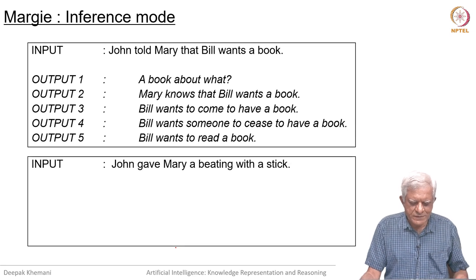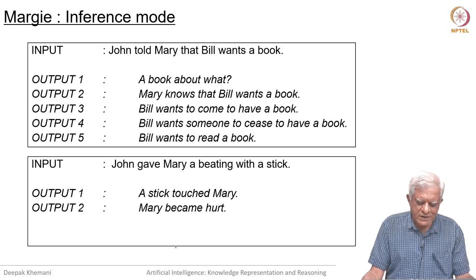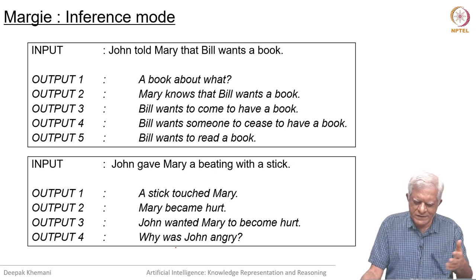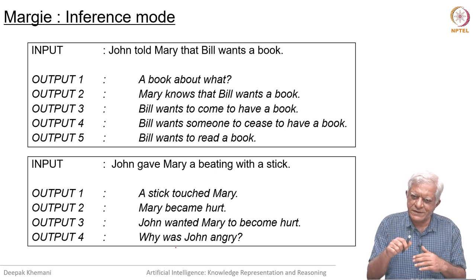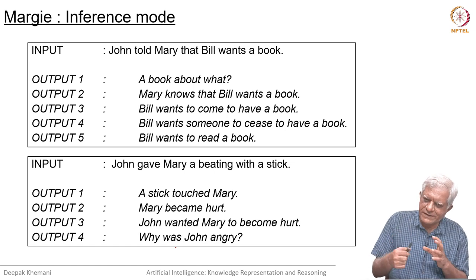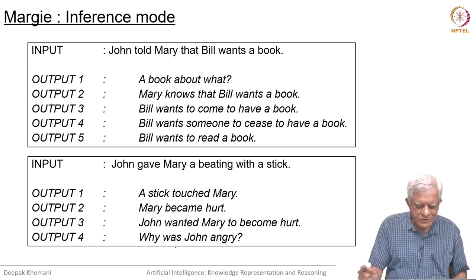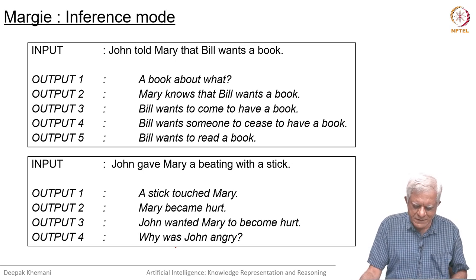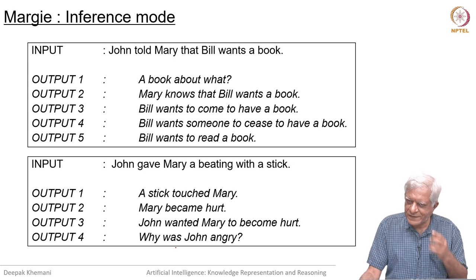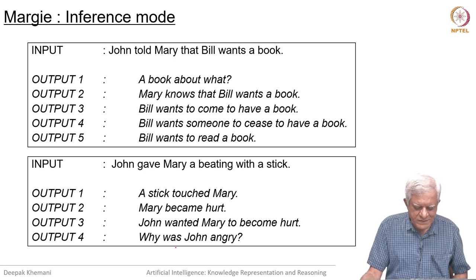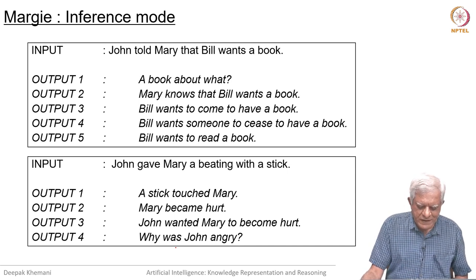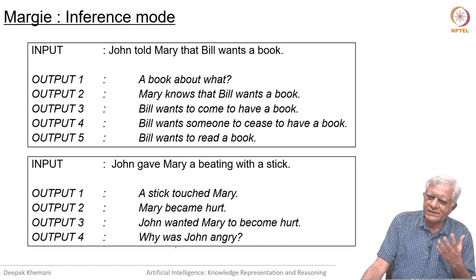Here is another example: John gave Mary a beating with a stick. You can infer a stick touched Mary — we will see later that hitting somebody with a stick involves physical contact between the stick and the person being hit. That is why Marji could infer that a stick touched Mary, Mary became hurt. These are plausible inferences; they are not necessarily deductive. John wanted Mary to get hurt. Why was John angry? All this involves somewhat ad hoc inferences.